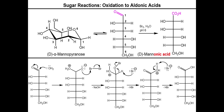This process applies to any aldo sugar. Importantly, the oxidation only occurs with an aldehyde component because you need a CH bond on the carbon being oxidized. That means keto sugars would not undergo this reaction. However, due to enol and enolate conversions, a ketose could potentially turn into an aldose and undergo oxidation anyway — so that's something to watch out for.